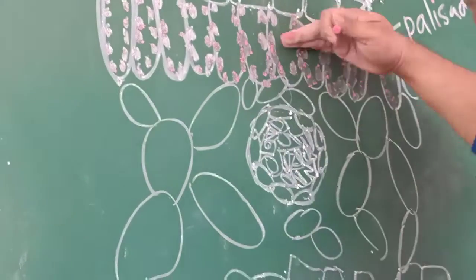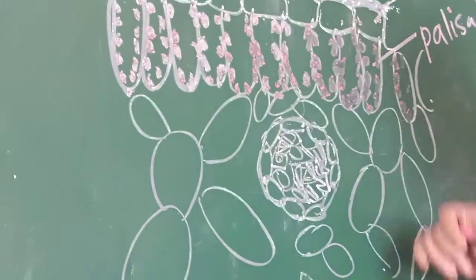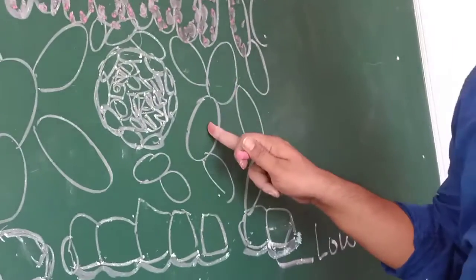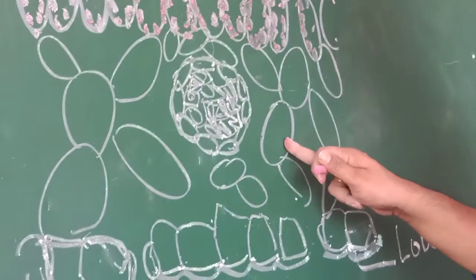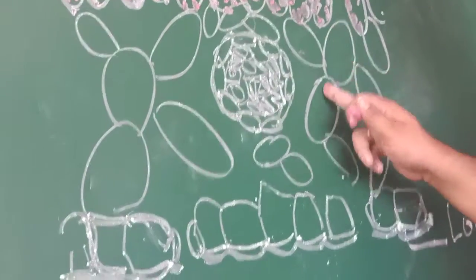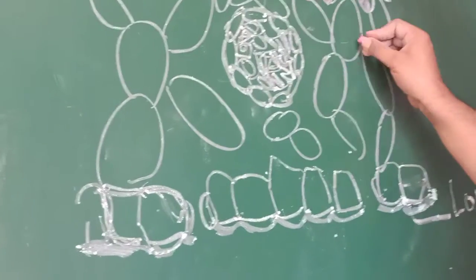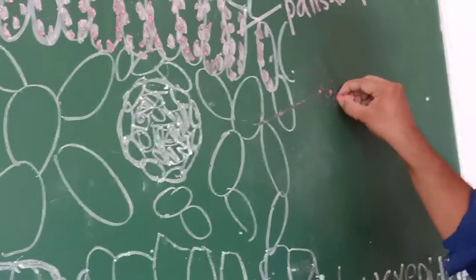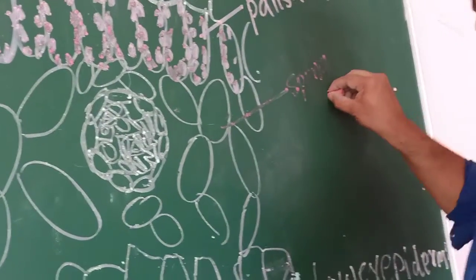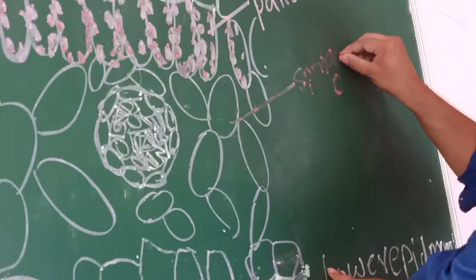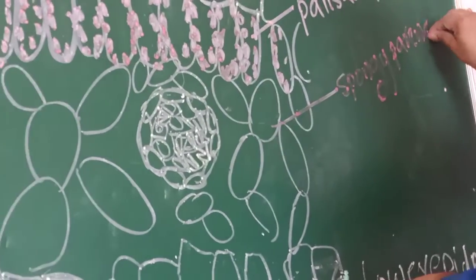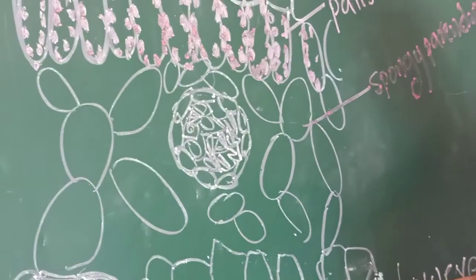Below the palisade parenchyma, we observe these cells — oval and cylindery-shaped cells. These we can call spongy parenchyma. These are parenchyma cells which are useful to store food materials.